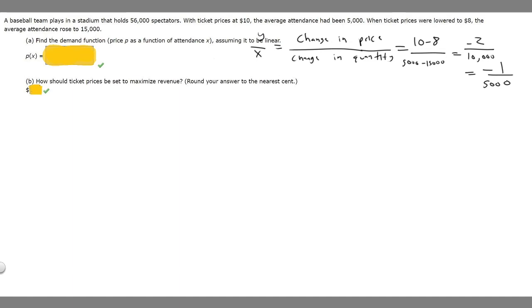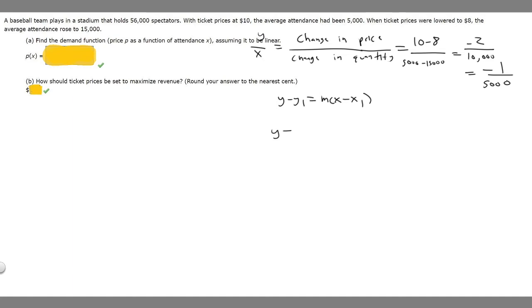Now we want to find the actual function using the point-slope formula: y minus y1 equals m times x minus x1. Here y represents price and x represents quantity. We'll pick the point where ticket prices are $10 and attendance is 5,000. So y1 is 10 and x1 is 5,000. We could have chosen $8 and 15,000, but $10 and 5,000 is easier.